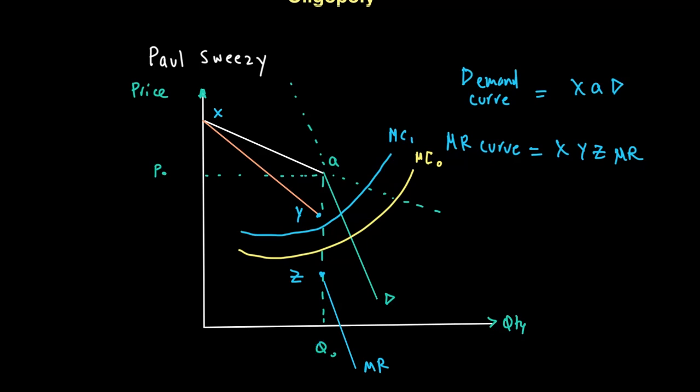Only if there's a very high change in cost, for example, if the marginal cost becomes MC2, or MC3, you will see a change in the price or quantity. Otherwise, the MC equals MR will lead to the same price P0 and the same quantity Q0.